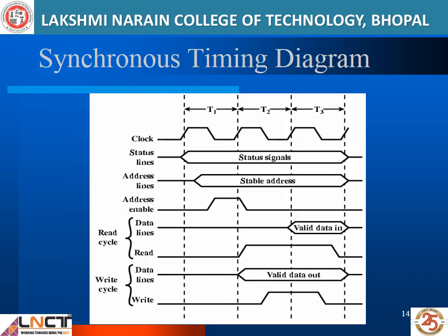Looking at the timing diagram of a synchronous system, there are multiple T-states: T1, T2, T3, and so on — also called clock pulses. When the system starts, the control line (called the status line) holds the control signal and the address line holds the address. In the case of a system with a multiplex bus, the bus size is 16 bits in the 8085 processor.